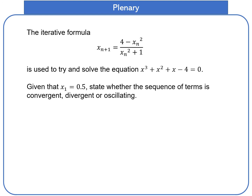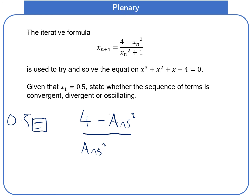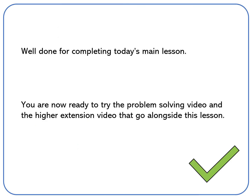Start with 0.5 equals in the calculator. Type in 4 minus ANS squared, all divided by ANS squared plus 1. Press equals and get 3. Press again and get minus a half. Press again and get 3. Press again and get minus a half. This is clearly an oscillating sequence. Well done for completing today's main lesson — you are now ready to try the problem solving video and the higher extension video that go alongside this lesson.